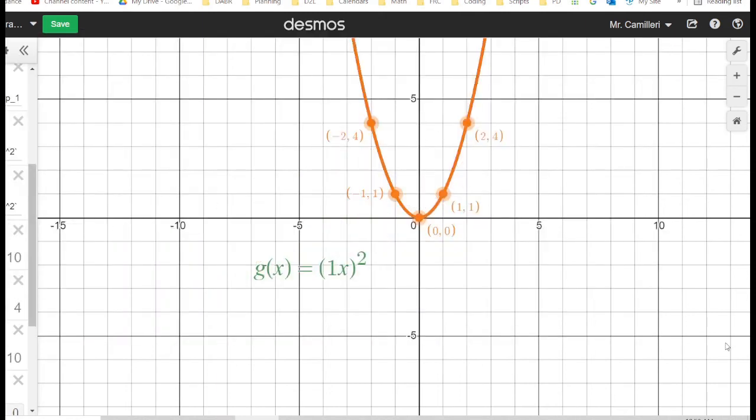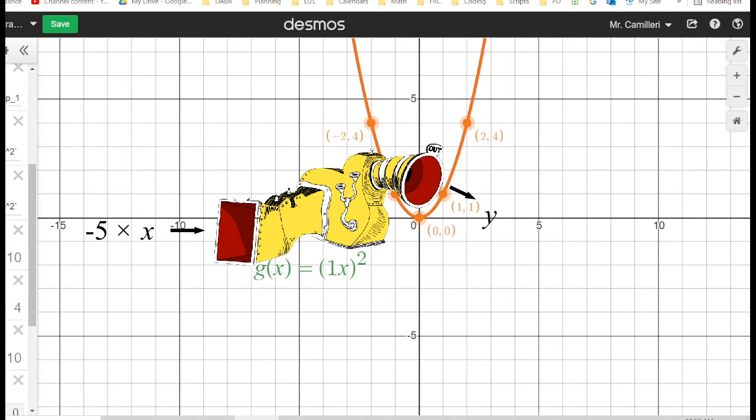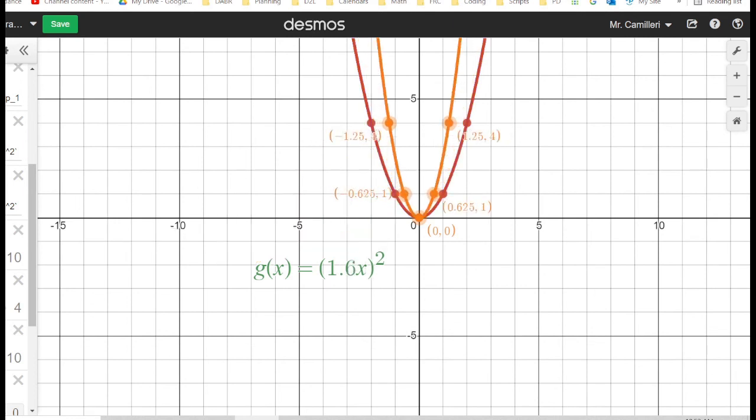So what happens if we multiply x by a number before squaring it? So we're multiplying x before it goes into the function machine. As this number grows we're getting a horizontal compression, and if it goes below 1 we see a horizontal stretch.